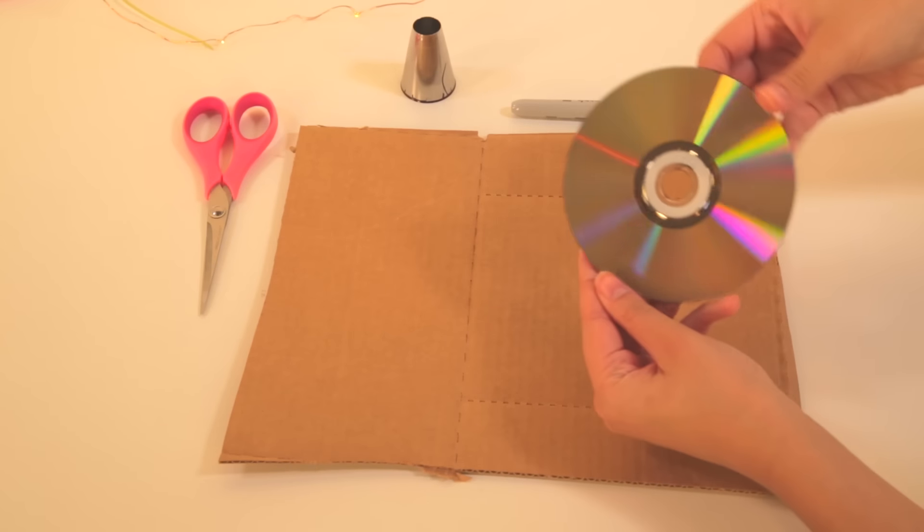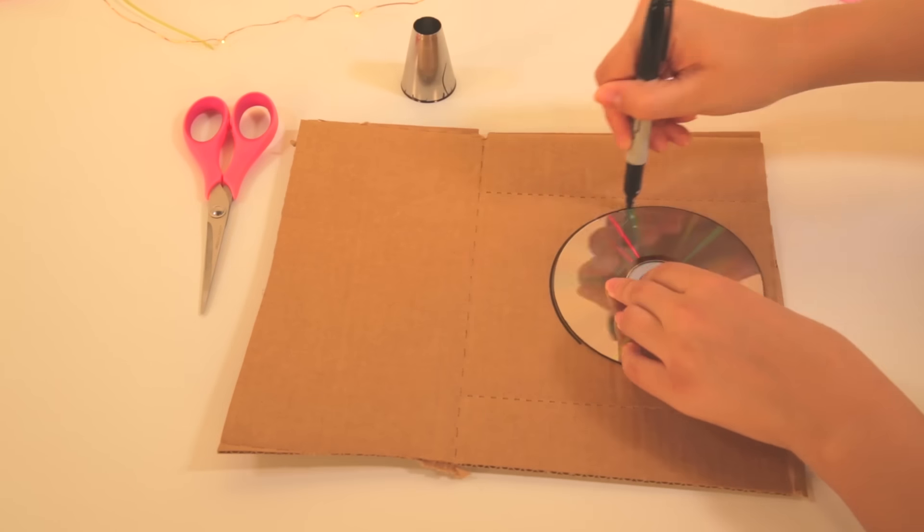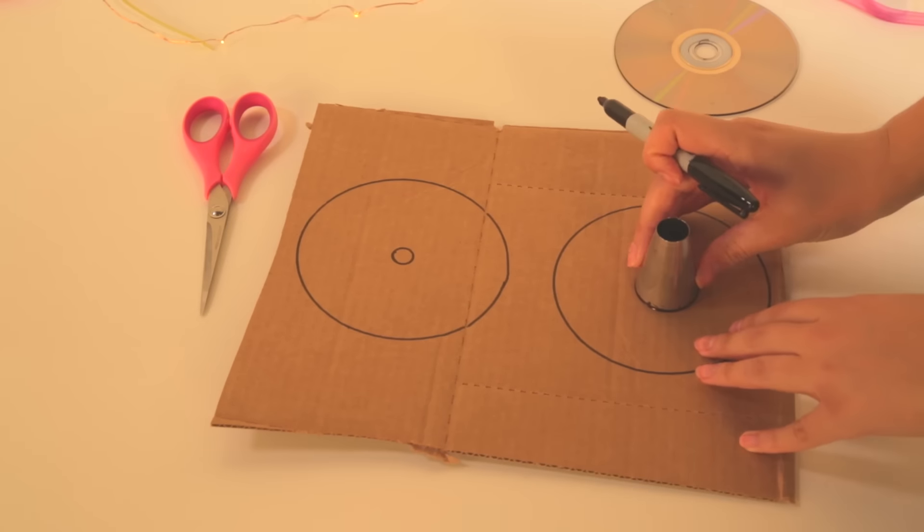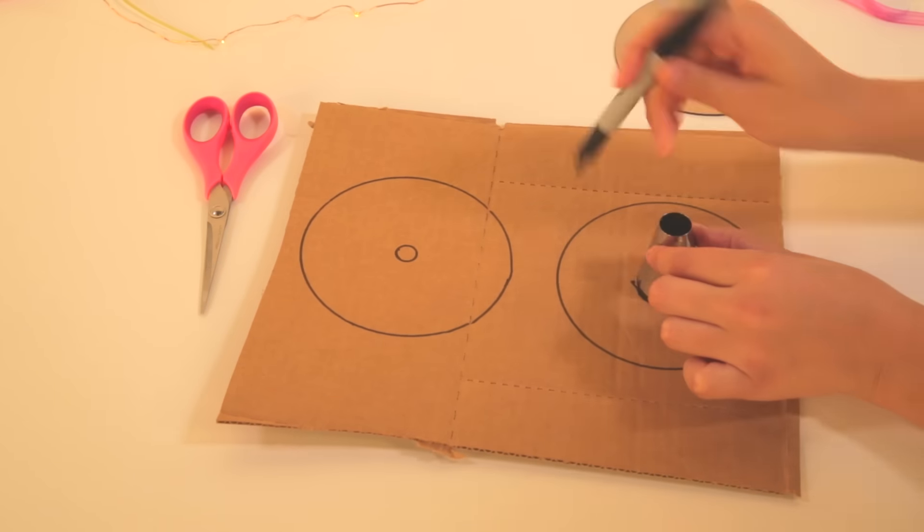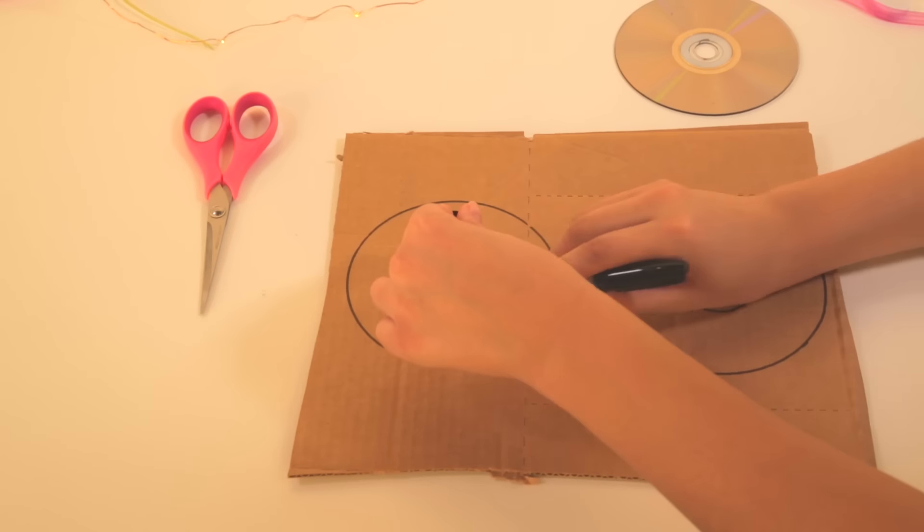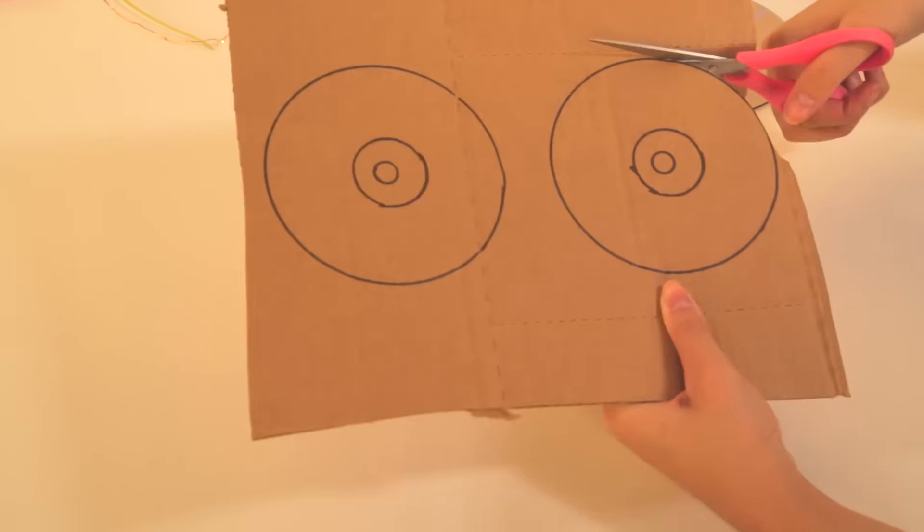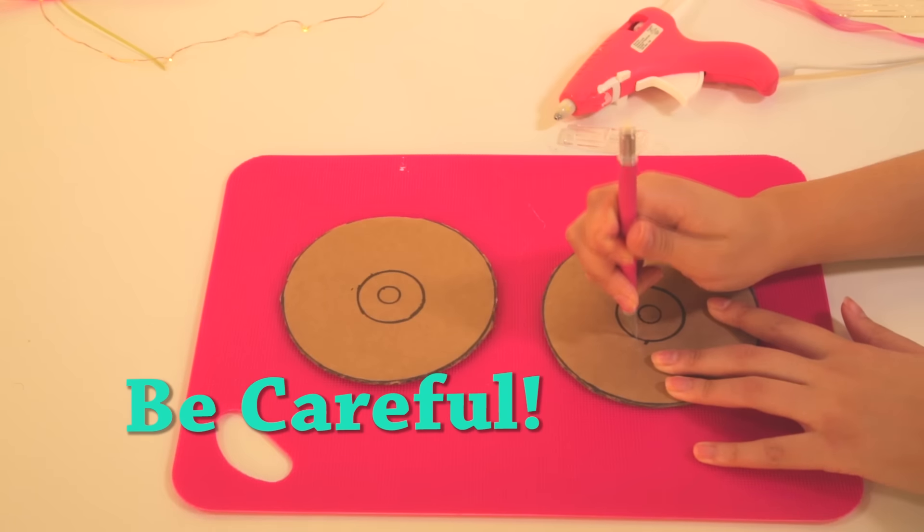To start, grab your cardboard and CD. Use your marker to trace the outer and inner circles. Place your circle tip on the inner circle. Press the outside of the tip so you have a slightly larger circle at the center. Cut up the circles using your scissors or your exacto knife.